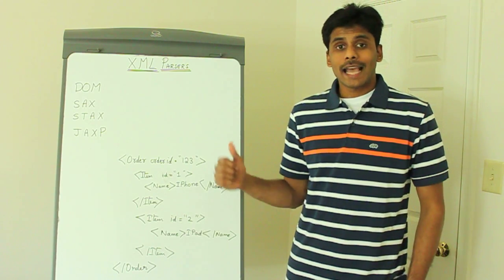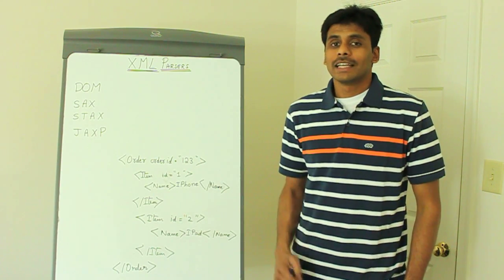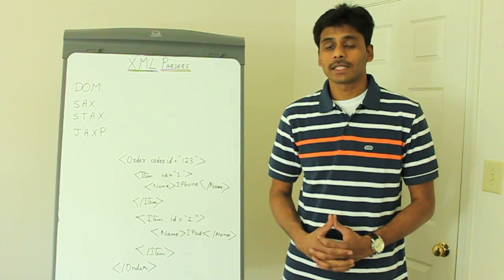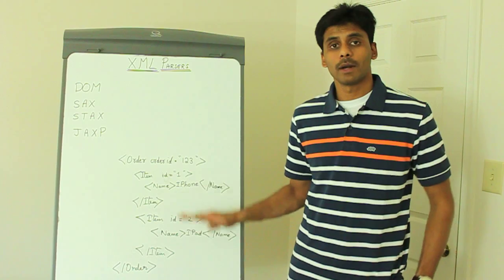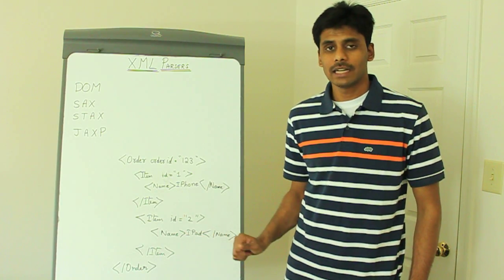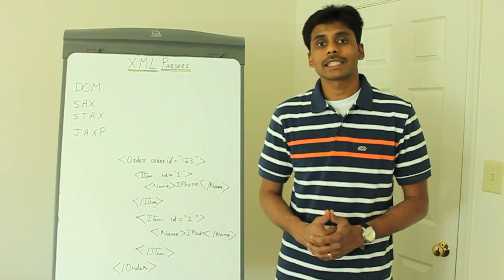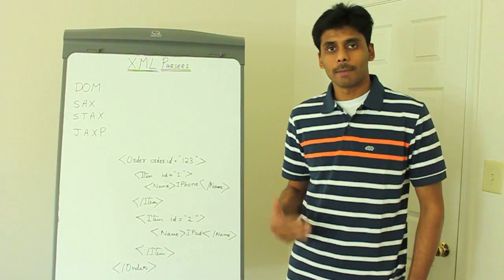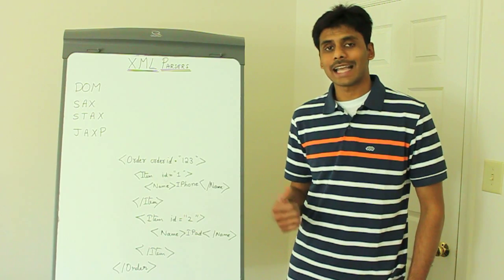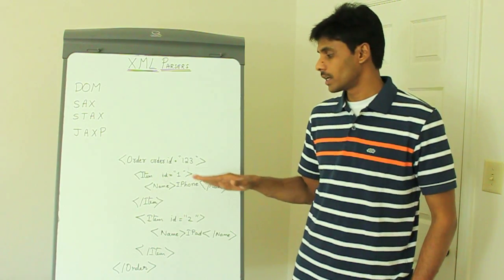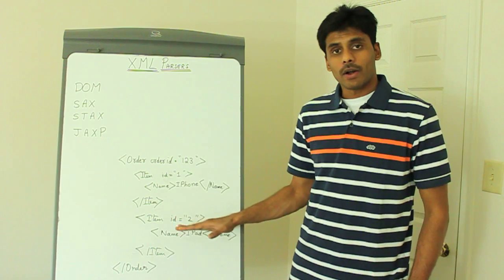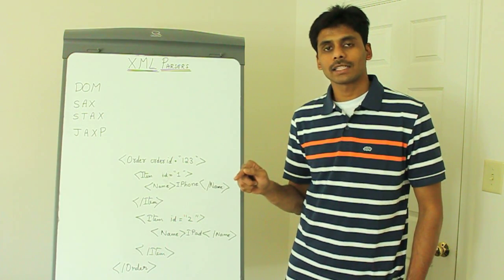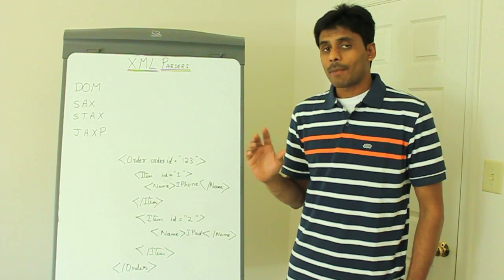That brings us to the SAX parser, which comes to the rescue. SAX stands for Simple API for XML parsing, and a SAX parser, unlike the DOM parser, doesn't load the entire XML document into memory. Instead, it allows us to register a handler — a class we write where we override the different methods. We register this handler with the SAX parser, and when the SAX parser parses our order XML, it keeps firing events by invoking the methods on our handler class, within which we take appropriate action.